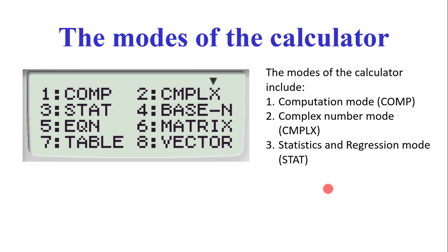Number four is the number base mode, or base-N. This mode enables you to convert from one base to another — that is basically its function. Normally, some bases are not included; it is limited to a few of them, so don't get your hopes too high. There are some few ones we'll consider.